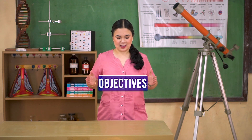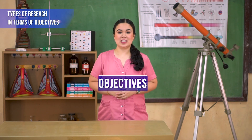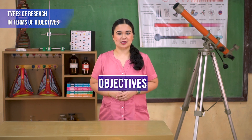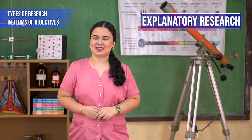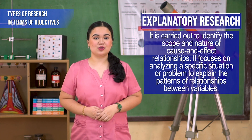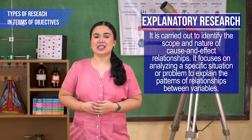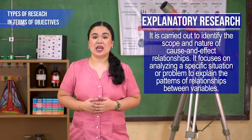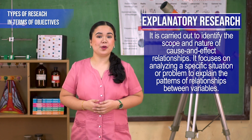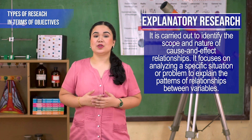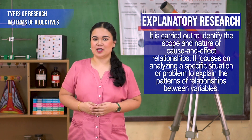The second viewpoint on the types of research is the objectives. There are four types of research under this viewpoint. First is explanatory research. It is carried out to identify the scope and nature of cause and effect relationships. It focuses on analyzing a specific situation or problem to explain the patterns of relationships between variables.